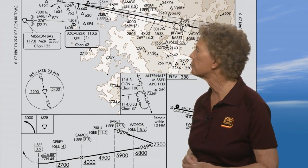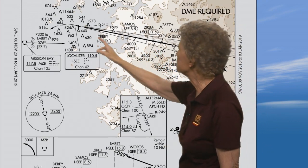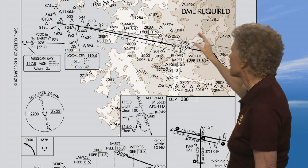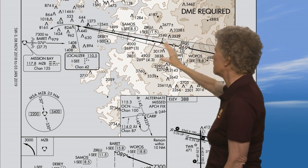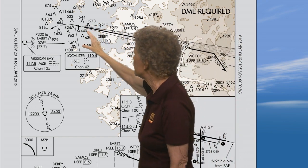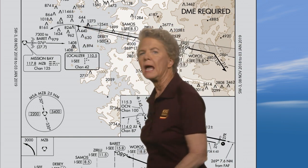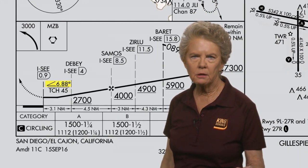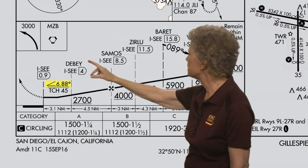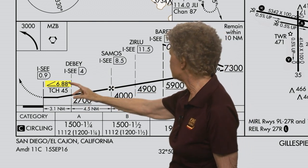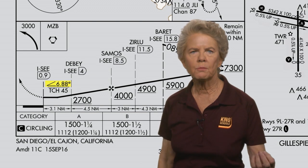Notice that on this approach, the localizer is lined up with the runway. However, there is a lot of rough terrain out here to the east that keeps you high on the approach until you are very near the airport. And as you can see in the profile view, the angle of descent from the step-down fix Debbie is 6.88 degrees instead of the normal 3 degrees.